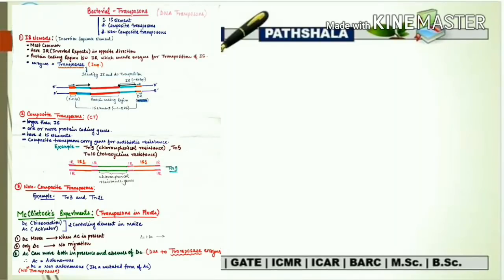Now let's talk about different examples. In the bacterial system, DNA transposons are mainly present and are of three types: first, insertion sequence elements (IS elements); second, composite transposons; and third, non-composite transposons. IS elements have a protein-coding region flanked by inverted repeats, and the protein coded is transposase.